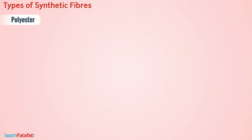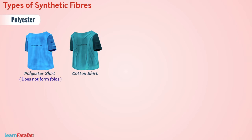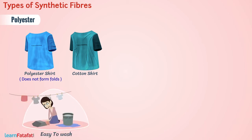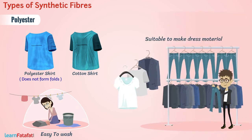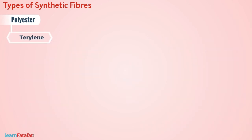Another synthetic fiber is polyester. Unlike cotton cloths, fabric made from polyester does not form folds. Instead, it remains clean and fresh. It is easy to wash such clothes. Therefore, polyester is suitable to make dress material. One of the popular polyester fibers, terrylene, is an important one.